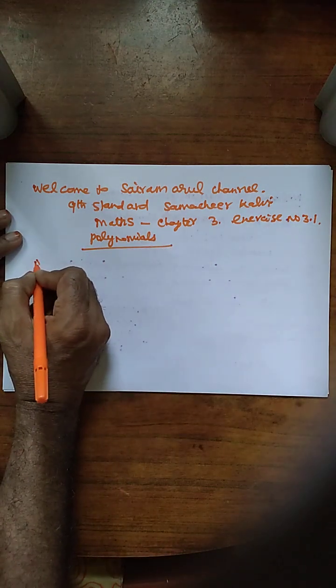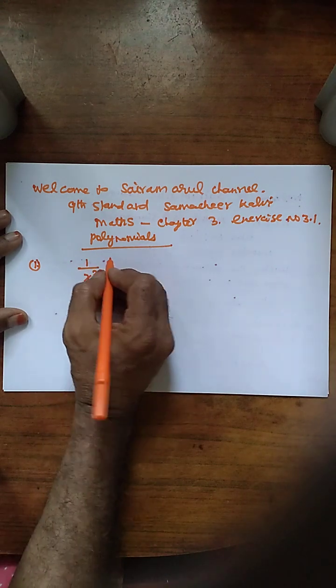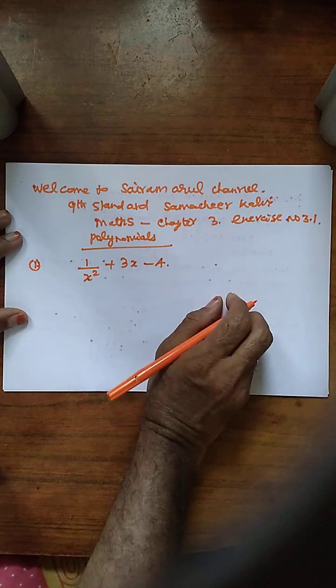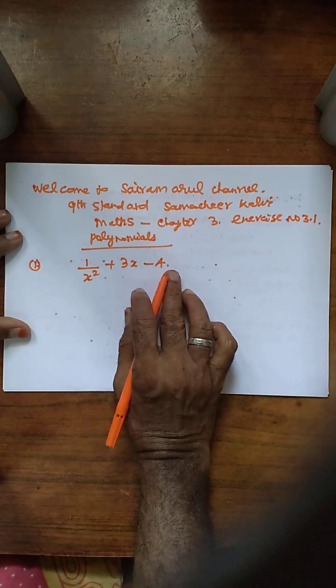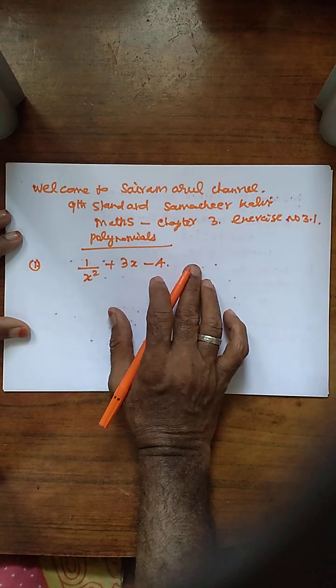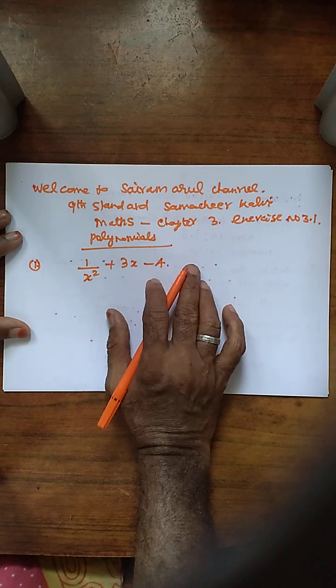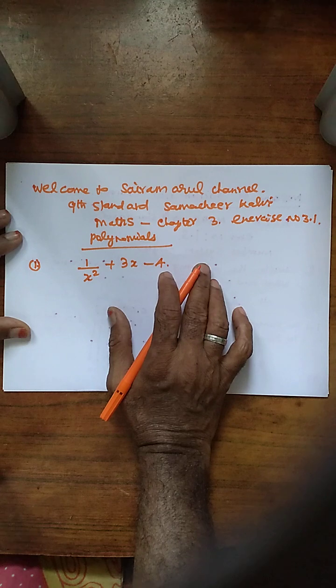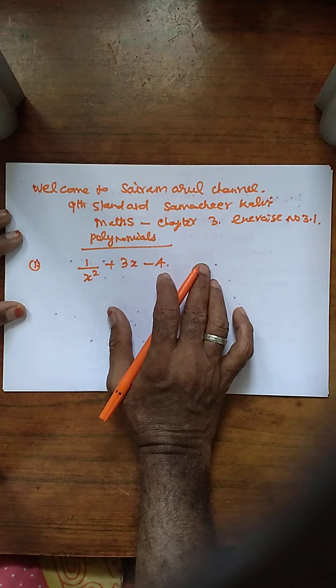First sum is 1 by x squared plus 3x minus 4. Asking if it is a polynomial or not. If it is a polynomial, give reason why this is polynomial. If it is not a polynomial, also give reason why this is not a polynomial.